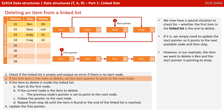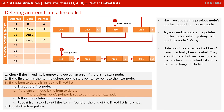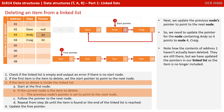However, in our example, the item we want to delete is Ben, and the start pointer is pointing to Andy. So we've determined that the node we want to delete is somewhere inside the linked list. Starting at the first node, we proceed through the linked list in a linear fashion, comparing each item with the value of the node we want to delete, until we find the correct node or reach the end of the list. We discover the node we want to delete is Ben, which is at address 1. Next, we update the previous node's pointer to point to the next node, so we need to update the pointer for the node containing Andy so it now points to node 4, Craig.